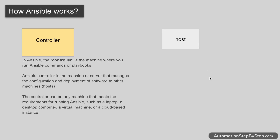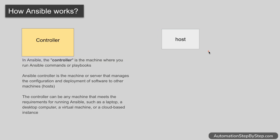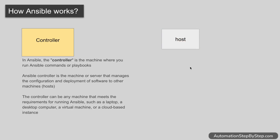The controller machine is where you will install Ansible and create Ansible files like the inventory file and the playbooks. In Ansible, we do not have to install it on the host systems because Ansible is agentless. We just need to have SSH connectivity between the controller and the host — most commonly SSH is used to connect them.